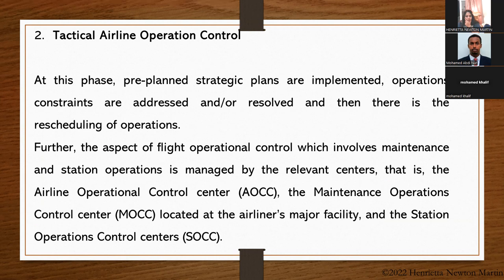The aspect of flight operation control involves maintenance and station operations, which is managed by relevant centers. This is theoretical content which you would see practically if you're part of the airlines at airports. Theoretically we categorize it into strategic and tactical. The tactical part involves the speciality implemented by specialists in a particular field. The aspect of flight operation control involves: the maintenance operation control center, located at the airline's major facility; and the station operation control center. There are also airline operations control groups — AOCG — which are part of this AOCC at the center. The airline operations may be referred to by different departmental names, such as systems control department or airlines control department. This AOCC may be divided basically into three functional groups.